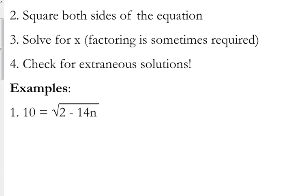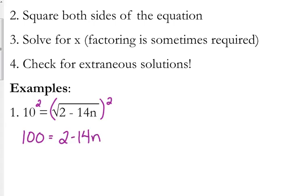As I mentioned while I was explaining the steps, this one is already isolated. The 2 minus 14n is under the square root. We cannot change those numbers until we get rid of that square root, and we get rid of the square root by squaring both sides. If you do it to one side, you have to do the exact same thing to the other side. 10 squared is 100. Squaring a square root gets rid of the square root — you are just left with what's under it. Then this is just a regular linear equation that we're used to solving.